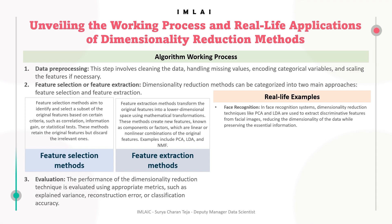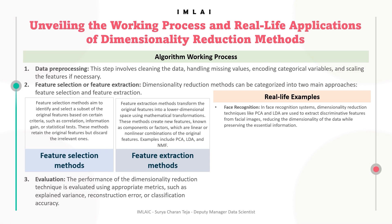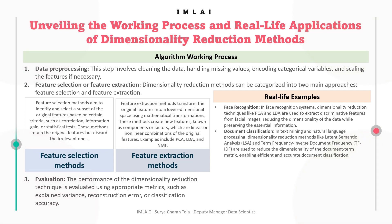Another example is document classification. In text mining and natural language processing, dimensionality reduction methods like latent semantic analysis (LSA) and term frequency inverse document frequency (TF-IDF) are used to reduce the dimensionality of the document term matrix, enabling efficient and accurate document classification.